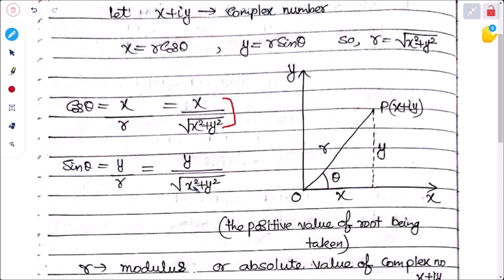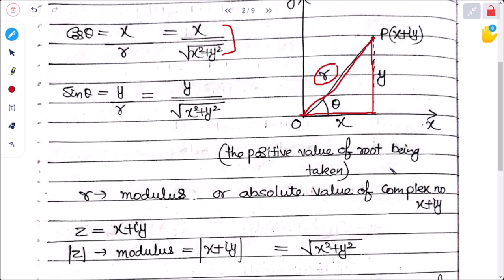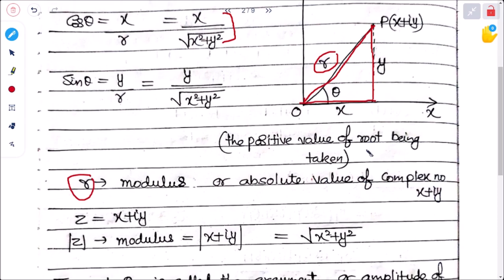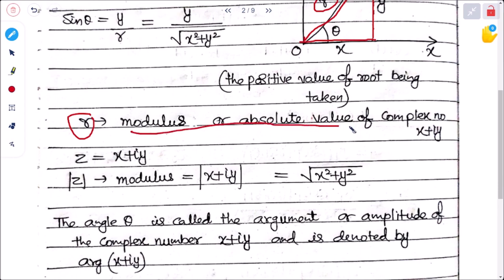If we plot this in the plane, P is a point with coordinates (x, y). The horizontal distance is x, vertical is y, and the distance from origin O to P is r. Only the positive value of the root is taken. So r is called the modulus or absolute value of the complex number x + iy.